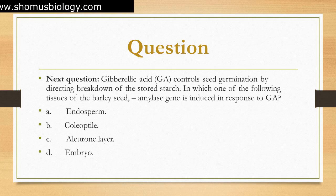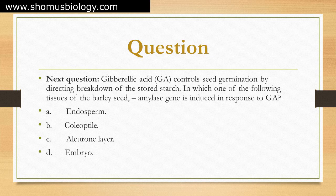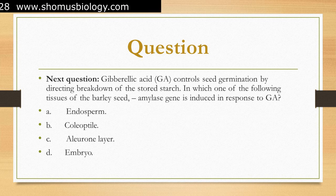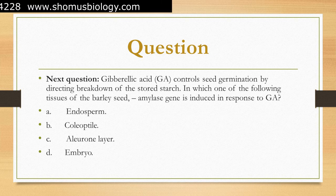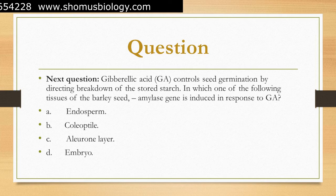In barley seeds, the induction of alpha-amylase gene in response to gibberellic acid (GA) occurs in the aleurone layer. Therefore, the correct answer is option C.